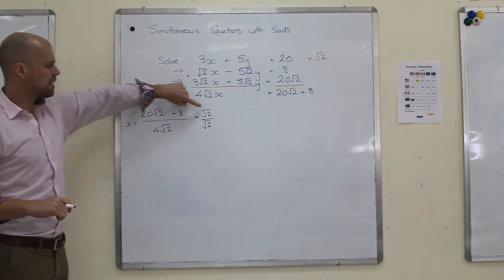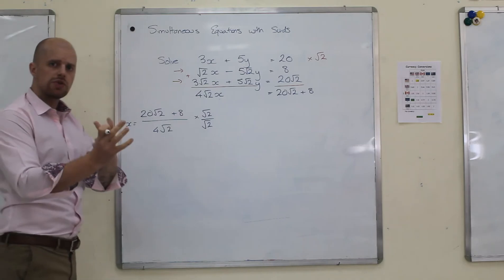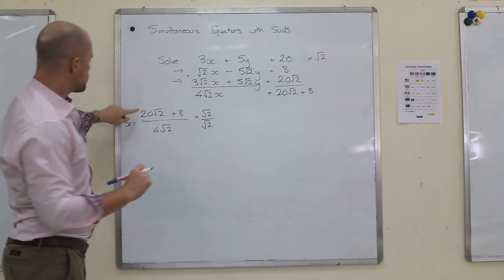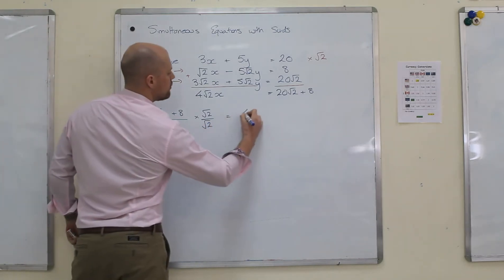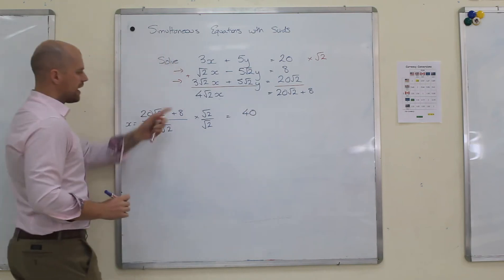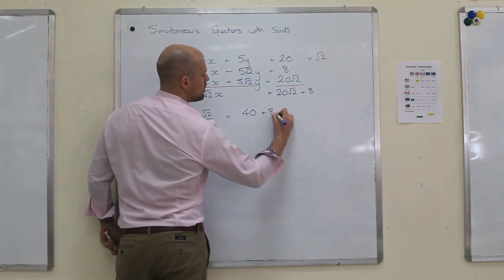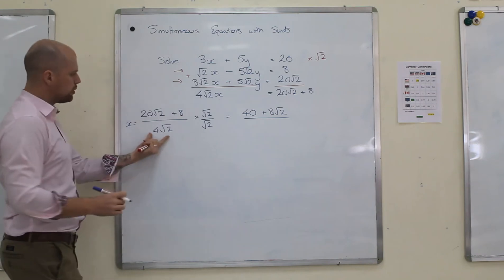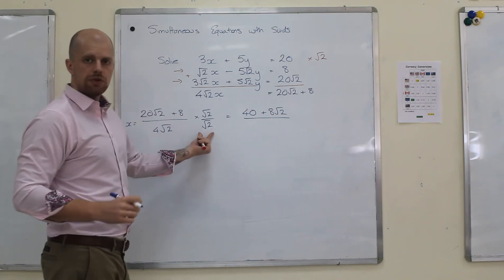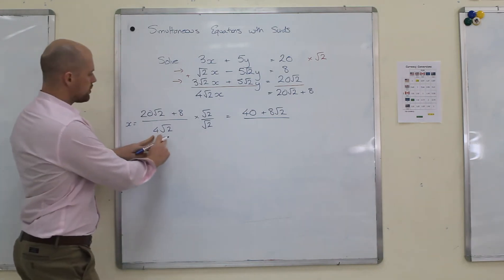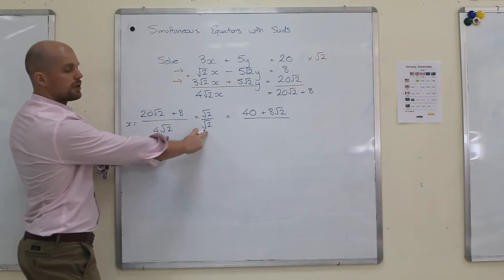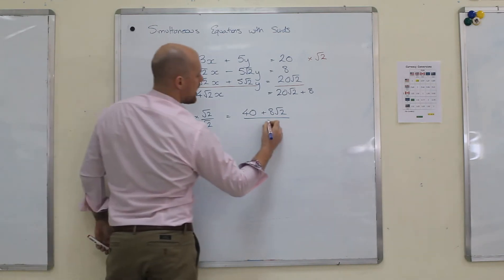20 root 2 times root 2. The root 2s are joined together, so I get 2. I have 20 times 2, which would be 40, and I have plus 8 root 2. And on the bottom, I have 4 root 2 times root 2. So 4 root 2 times root 2. Root 2 times root 2 is 2. 4 times 2 is 8.